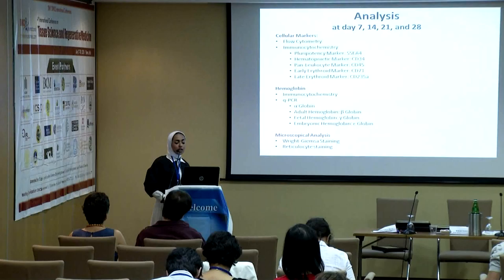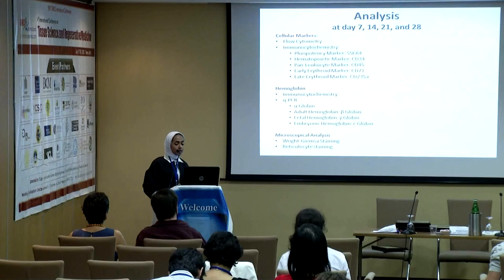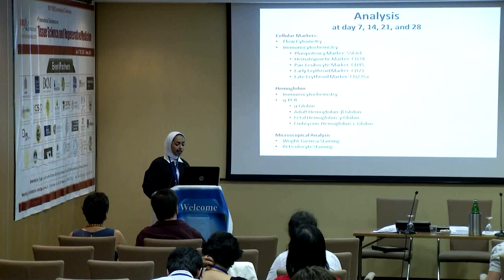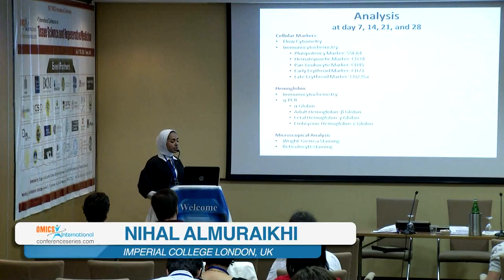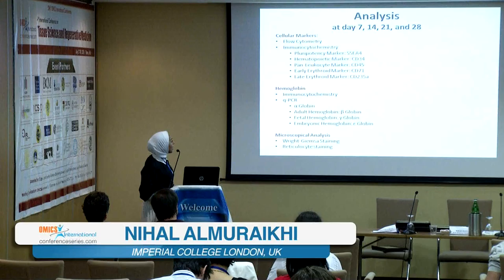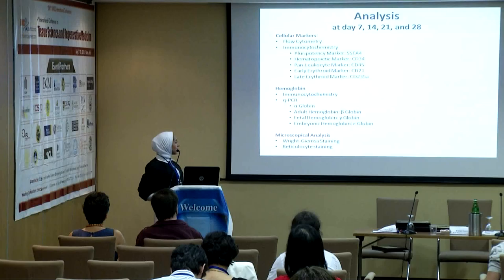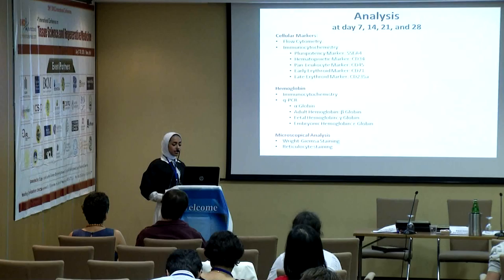The markers checked were one pluripotency marker, one early hematopoietic marker CD34, CD45, an early erythroid marker CD71, and a late erythroid marker CD235A — glycophorin A. The hemoglobin presence was confirmed with immunocytochemistry and real-time PCR. Microscopical analysis was also performed using Wright-Giemsa stain and reticulocyte staining.